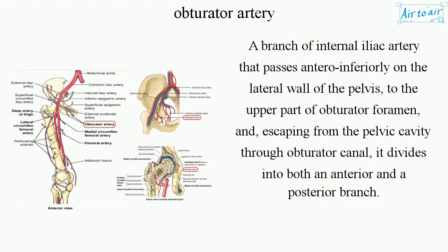A branch of internal iliac artery that passes antero-inferiorly on the lateral wall of the pelvis to the upper part of obturator foramen, and escaping from the pelvic cavity through obturator canal, it divides into both an anterior and the posterior branch.